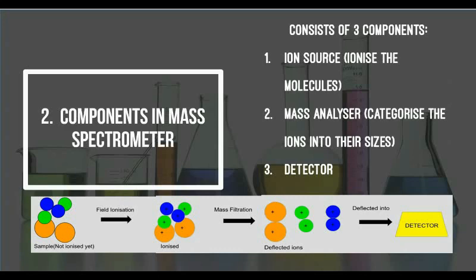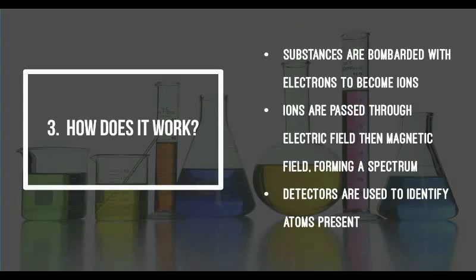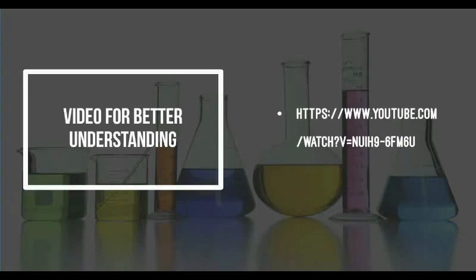There are three main components in mass spectrometry devices: the ion sources, mass analyzer, and the detector. The sample will be passed through an electric field and magnetic field forming charged particles. These charged particles will then be categorized into their different masses under mass filtration as the lighter ions are deflected more than the heavier ions. The detector will be used to determine what particles are present.